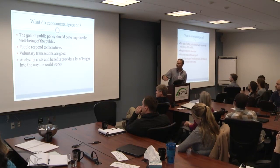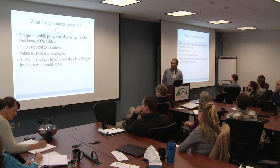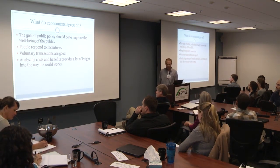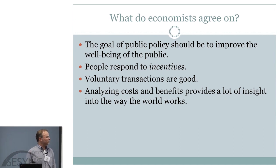Do economists agree on everything? No, definitely not. There's a lot of uncertainty and ambiguity — it's not a clear-cut, dry type of science. But what do economists agree on? Surprisingly, a lot. Some general things: we agree that public policy should be designed to improve the well-being of the public. We agree that people respond to incentives. We agree that voluntary transactions are good. And we agree that analyzing the costs and benefits of actions and inaction gives us a lot of information about why we are where we are.